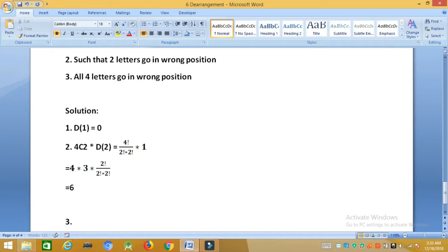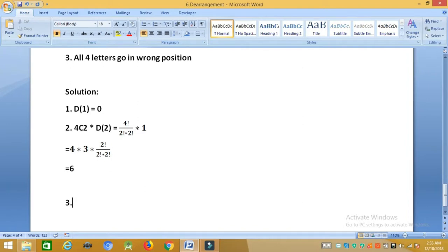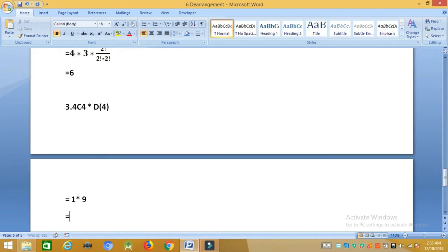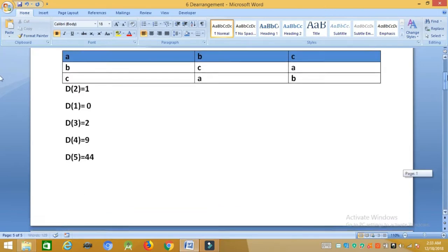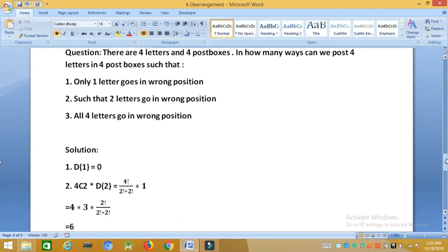Then we have the final part that all 4 letters go in wrong position, which is 4C4 into d4. We already know that nCn equals 1 into what is d4? 9. So 9 is the answer. This derangement thing is a very important concept which can be used in a lot of questions. They both think about derangement directly, but you have to solve it like that.